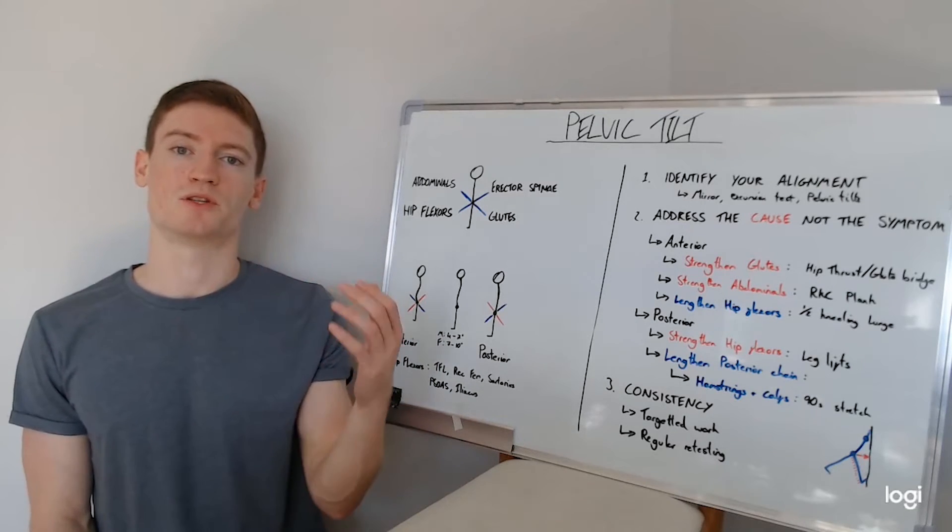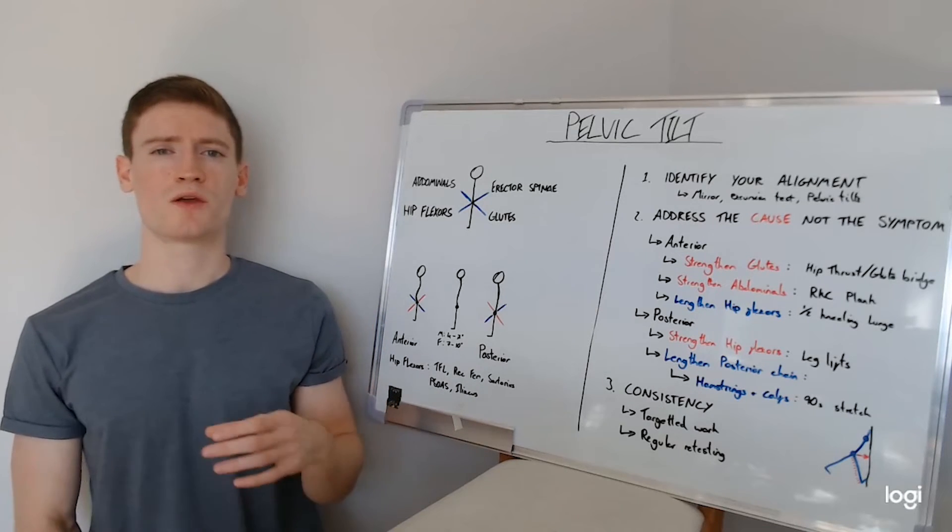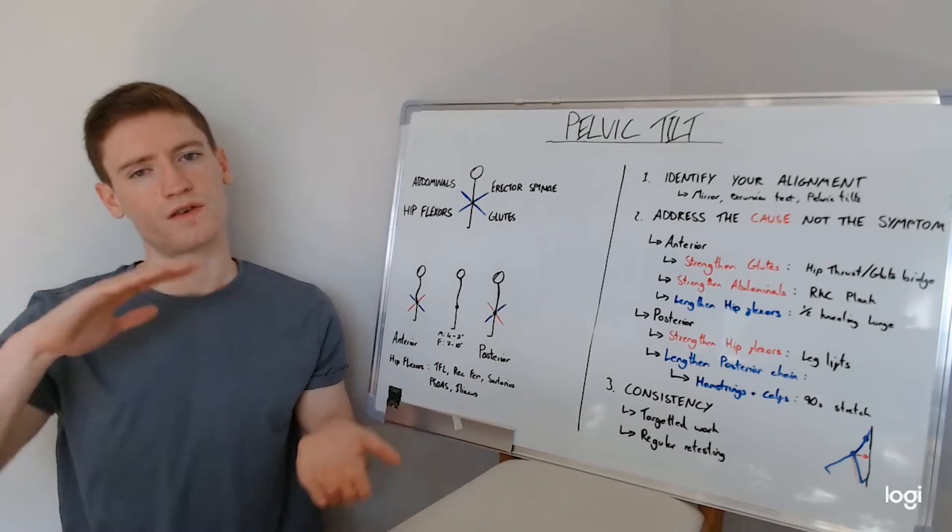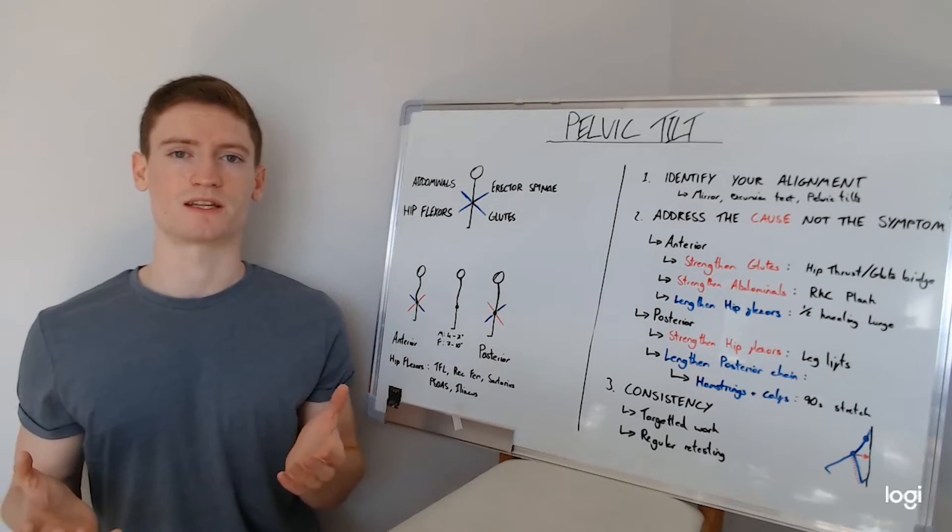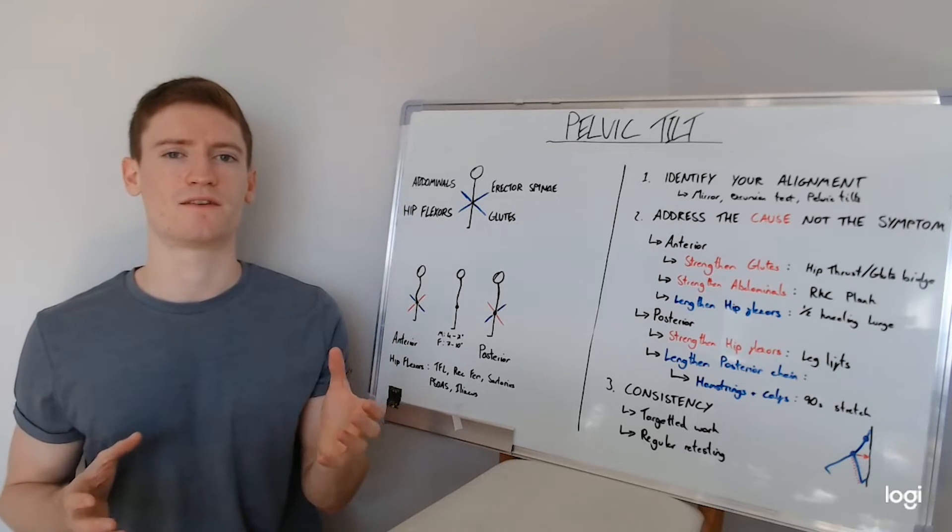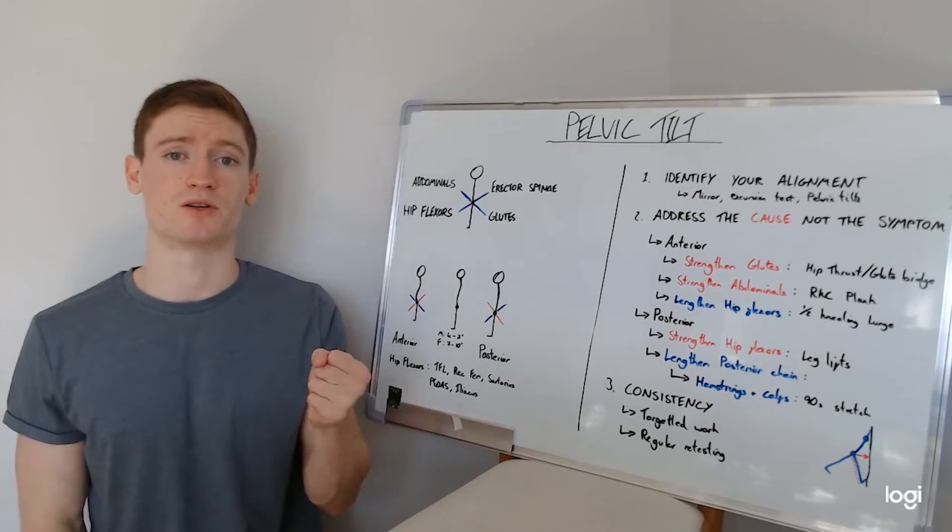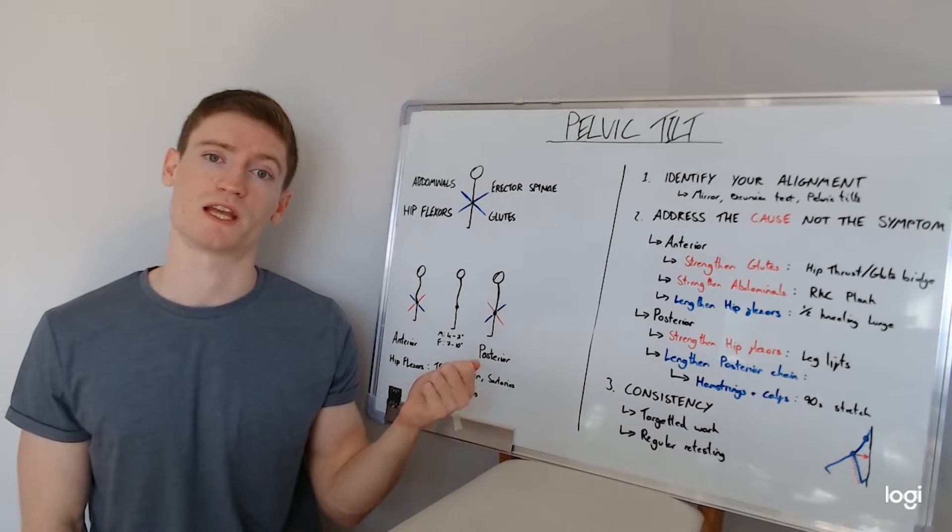So from there, hopefully that puts you in a position where you can start addressing that anterior pelvic tilt. If that's not you, if you have the posterior pelvic tilt, it's sort of flipped the other way. Instead, we've got this weakness of the hip flexors that we want to strengthen. So we do that through some degree of leg lift. So whether it's a straight leg lift or it's a bent leg lift, you essentially do the opposite motions to what we were trying to stretch before for the anterior pelvic tilt.